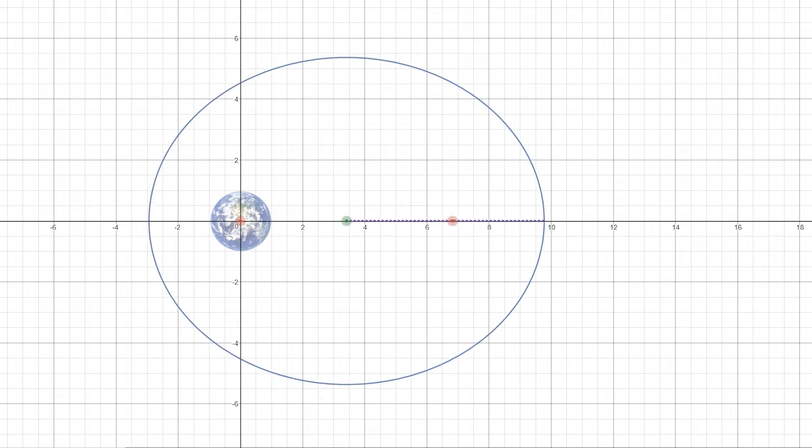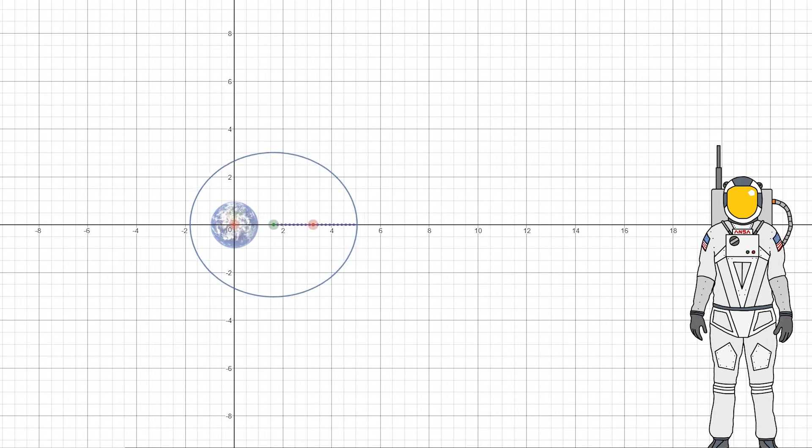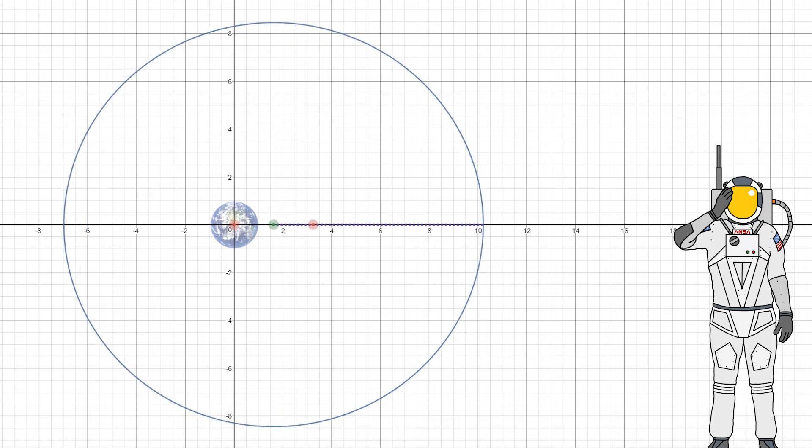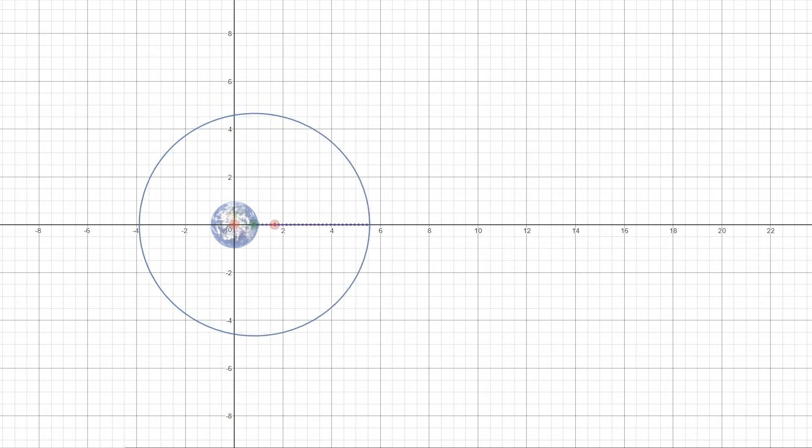You can also change the semi-major axis, which is this distance, and that will change how big and round your ellipse is. Only technical terms here, folks. But anyway, there is a link to the simulation in the description if you want to experiment for yourself.